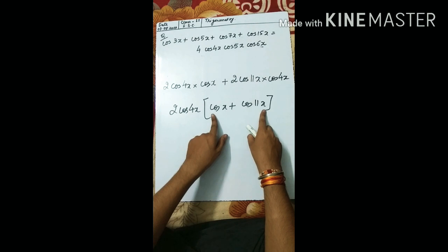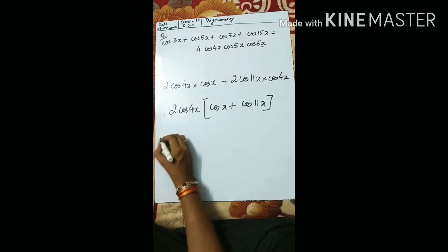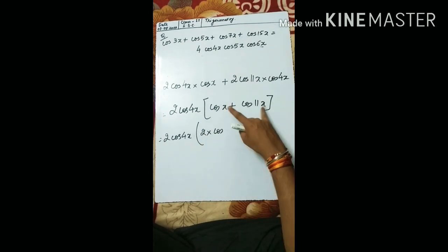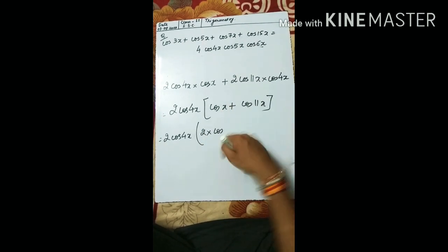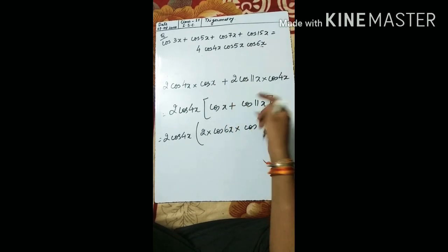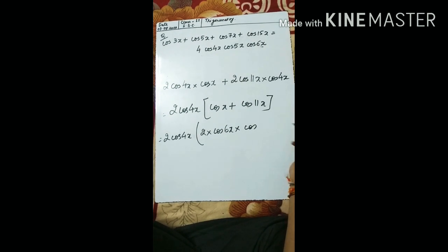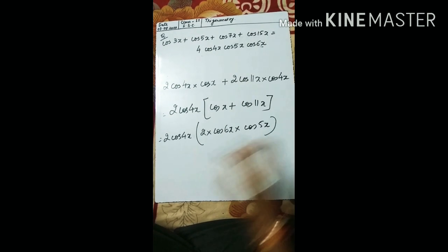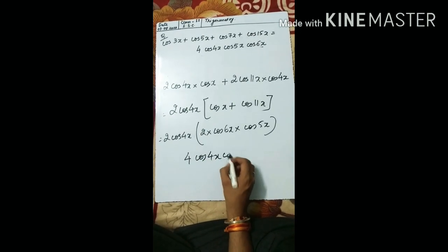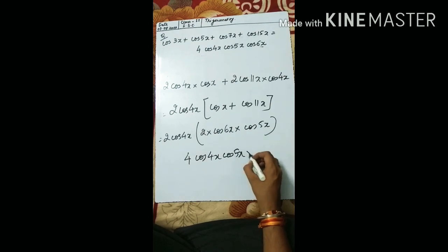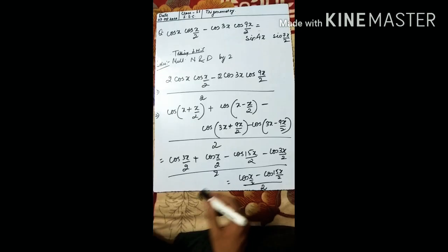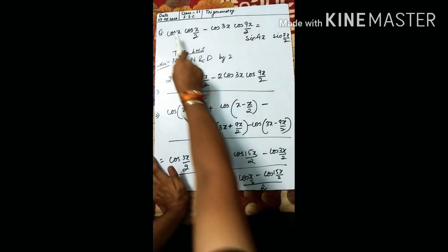Again apply the cos x + cos y identity to (cosx + cos11x): (x + 11x)/2 = 6x, and (x - 11x)/2 = -5x, cos(-5x) = cos5x. Multiplying out, this gives 4cos4x · cos5x · cos6x. Hence proved.